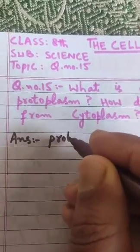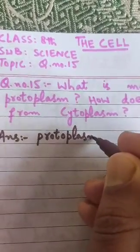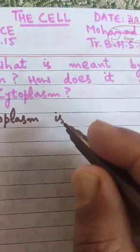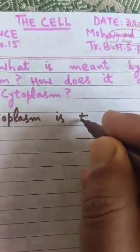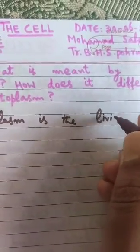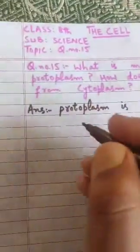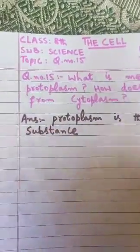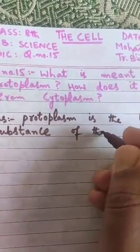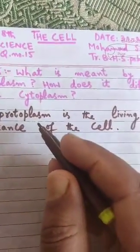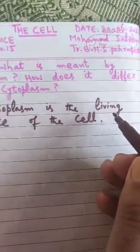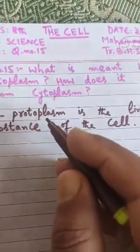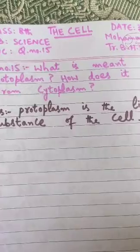Protoplasm is the living substance of the cell. Yeh living substance hai cell ka. Protoplasm ki wajah se cell zindha hai — it is because of protoplasm that the cell is alive. Let's see what components come under protoplasm that make the cell functional.